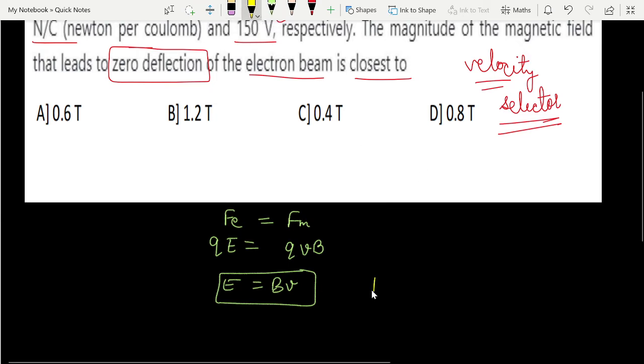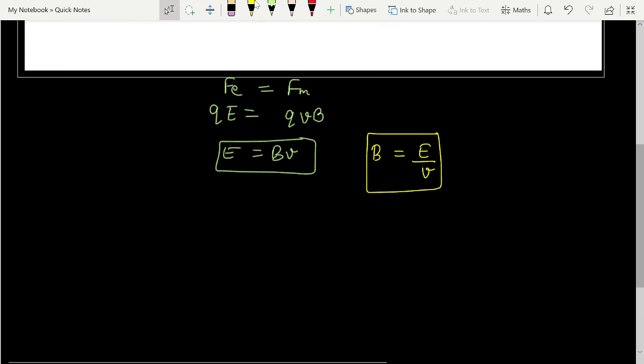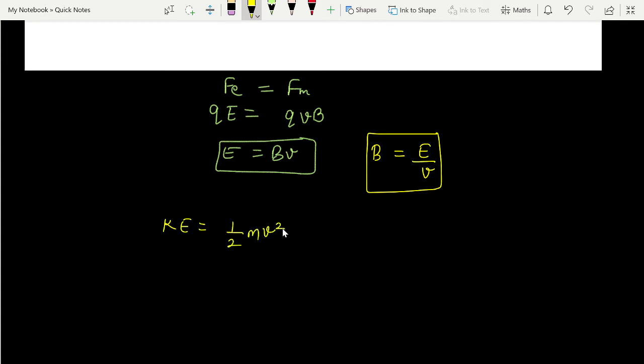So we have to find B, that is going to be E by V. We know the electric field but we don't know the velocity. But here the potential given is V 150V. So you know the concept of energy conservation. So we can write kinetic energy, we can write half mV². And we can write potential energy, we can write E into V. Electron charge is QV. The formula is QV. Q into volt will be the potential difference. The potential energy will be the potential energy. So Q charge is E because it is talking about electron.